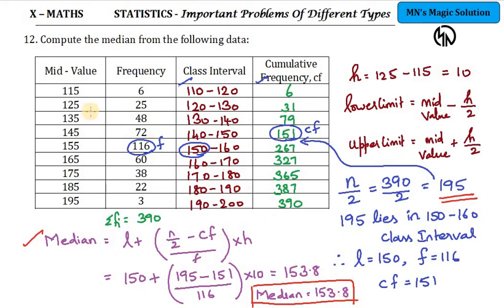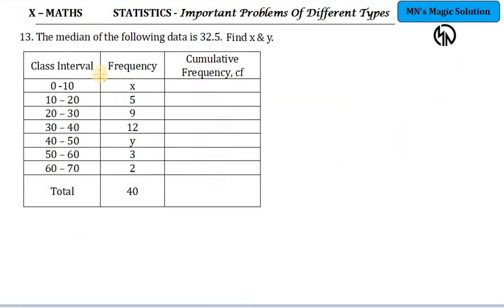In this problem, mid value and frequency given. What units they give. So, you can just write 153.8 units. Question number 13. The median of the following data is 32.5. So, in the question itself, median is given. You have to find x and y. Two unknowns. So, frequency given. Here, 0 to 10 is x, 10 to 20 is 5, 20 to 30 is 9. Like that, you have got all the frequencies. And, sum total of all frequencies is given as 40. Now, you have to find both x and y. So, for that, I am just trying out the cumulative frequency first. What is it?